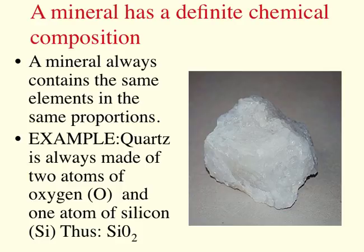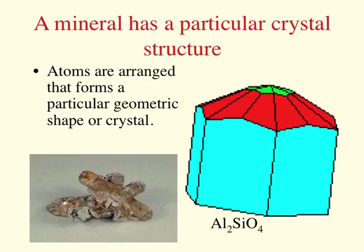It has to have a definite chemical composition. Quartz is SiO2 — always one silicon and two oxygens. That's the only formula, no matter if it's white quartz, rose quartz, smoky quartz, or purple quartz — always SiO2. And every mineral will have a unique crystalline structure, a.k.a. shape. If you're this particular mineral, it will always be this six-sided hexagonal shape — it can be big or little, but it's always the same shape.